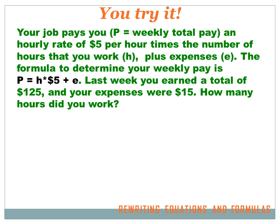Your job pays you, and p is the weekly total pay you earn. Your job pays you an hourly rate of $5 per hour times the number of hours you work — we'll call that h — plus expenses. The formula to determine your weekly pay is: total pay p equals hours worked times $5 per hour plus expenses. Last week you earned a total of $125 and your expenses were $15. How many hours did you work? Hit the pause button, solve the problem, and then hit the forward key to see the answer.